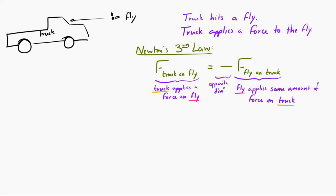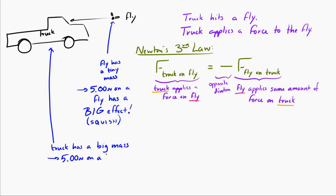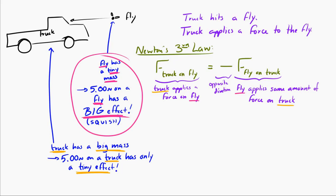The difference is that the masses of the fly and the truck are very different. Say the fly experiences 5 newtons — 5 newtons on a fly is quite a lot, enough to squish it. But 5 newtons on the truck is not very much; it's not going to affect the truck noticeably. There is a tiny acceleration of the truck — it does change its motion a little — but it's negligible. Newton's third law does apply; it's just that the same amount of force has a much greater and noticeable impact on the fly than on the truck.